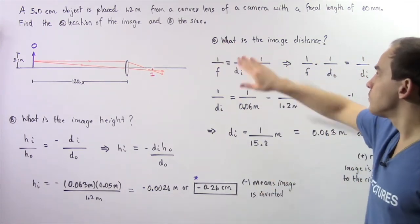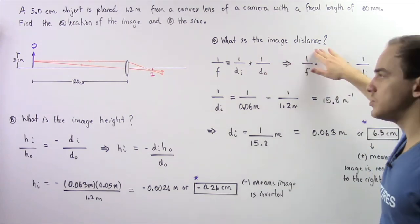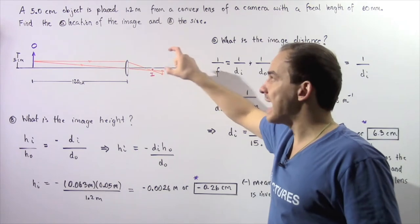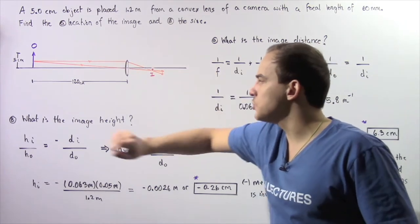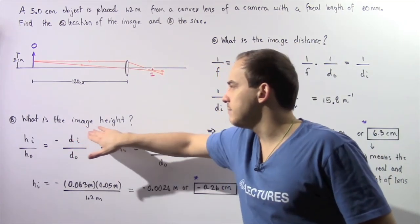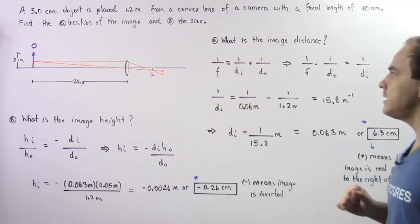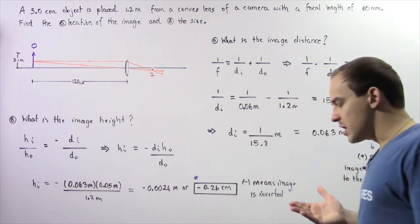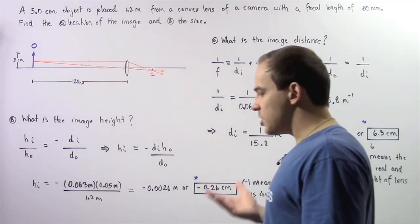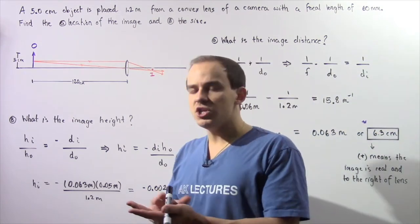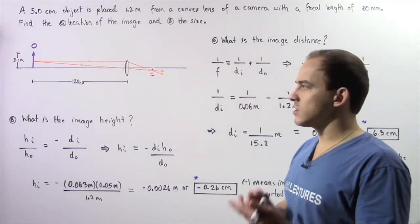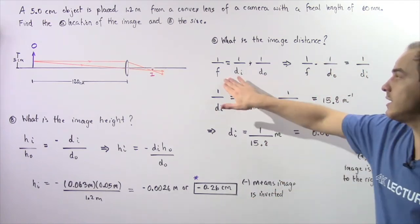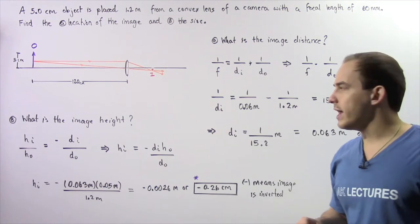In part A, we want to find the image distance. We know what the focal length is, and we know what the object distance is. So to find our image distance, we can use the thin lens equation.